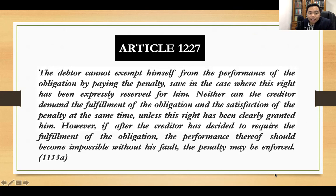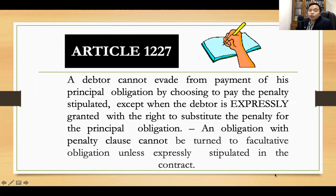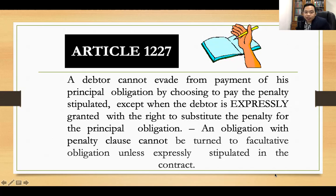Article 1227: the debtor cannot exempt himself from the performance of the obligation by paying the penalty, save in the case where this right has been expressly reserved for him. Neither can the creditor demand the fulfillment of the obligation and the satisfaction of the penalty at the same time, unless this right has been clearly granted him. However, if after the creditor has decided to require fulfillment of the obligation, the performance thereof should become impossible without his fault, then the penalty may be enforced. A debtor cannot evade payment of his principal obligation by choosing instead to pay the stipulated penalty, except when the debtor is expressly granted this right.